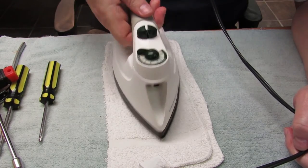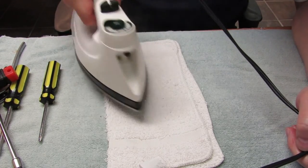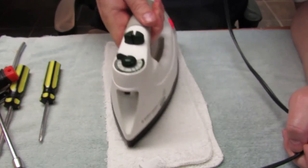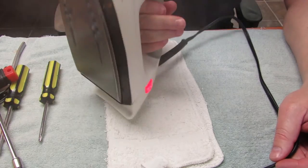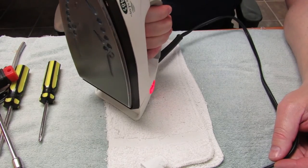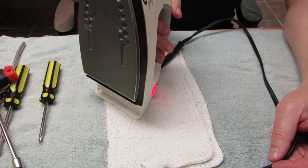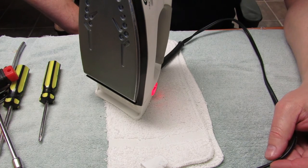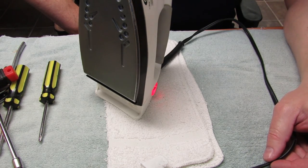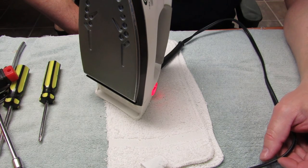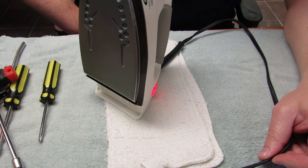While dad irons stuff, if you like this video, don't forget to like, favorite, and subscribe. Today dad showed us how to fix the Black and Decker Quick and Easy Auto Off 485. If you like this video, don't forget to like, favorite, and subscribe. Thanks for watching, bye bye.